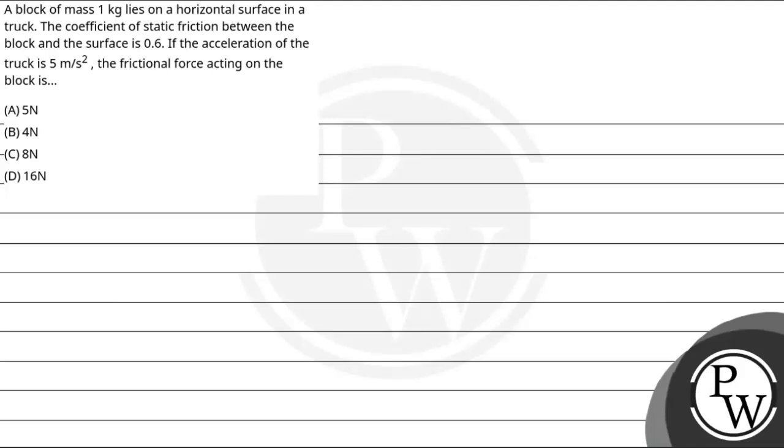Hello, let us read the question. The question says, a block of mass 1 kg lies on a horizontal surface in a truck. The coefficient of static friction between the block and the surface is 0.6. If the acceleration of the truck is 5 meter per second square, then the frictional force acting on the block is.